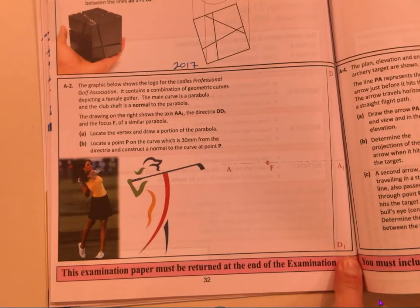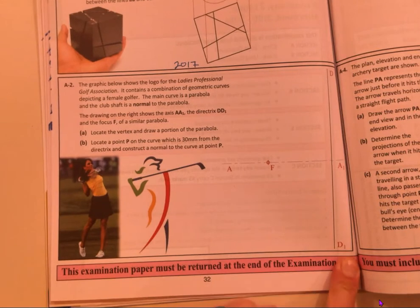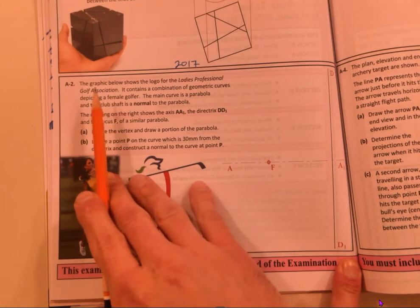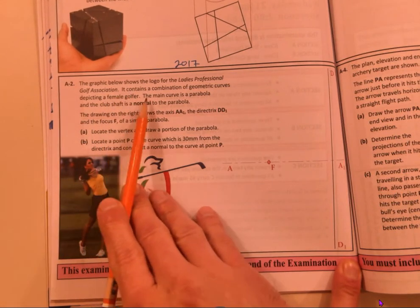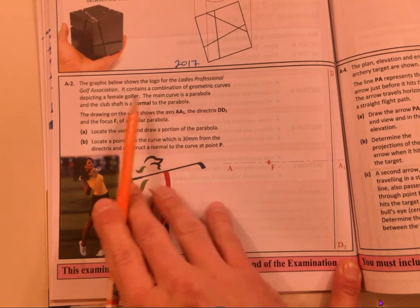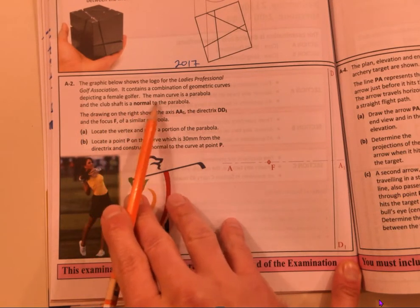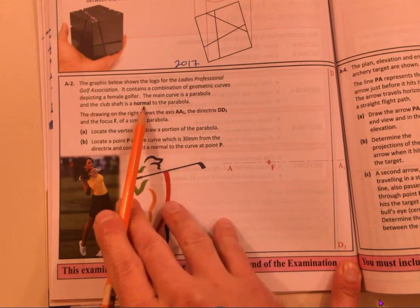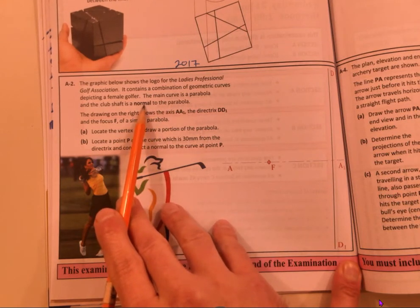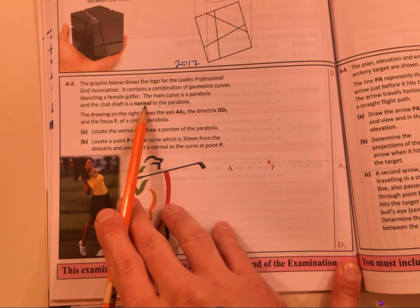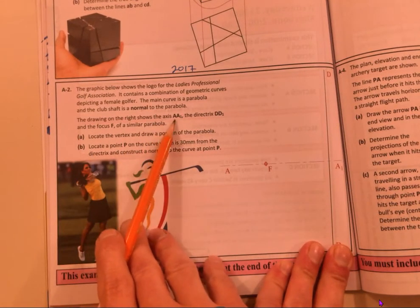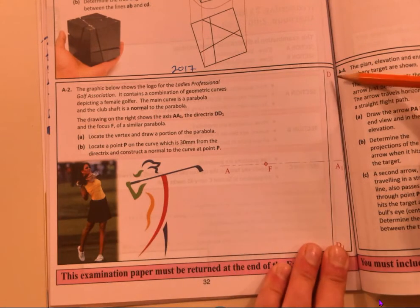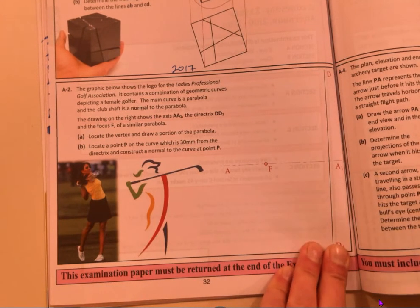The 2017 question, so you can see these types of questions come up pretty regularly. It's all about a golf logo. You can read it yourselves, I'm not gonna read through it to save time. The main curve is a parabola, and the club shaft is a normal to the parabola. So they're talking about a normal to the parabola. A normal is just a line at 90 degrees to a tangent. So if you've got a tangent, to get a normal you're just drawing a line at 90 degrees to the tangent. The information is all given out here. The drawing on the right shows an axis AA1 and directrix DD1.